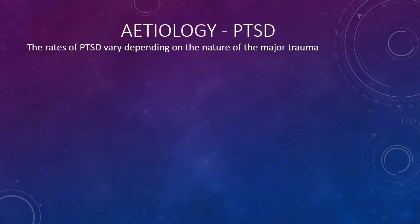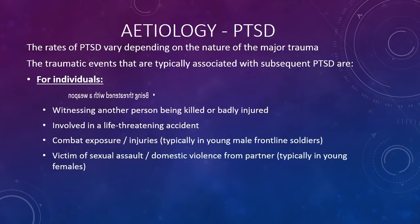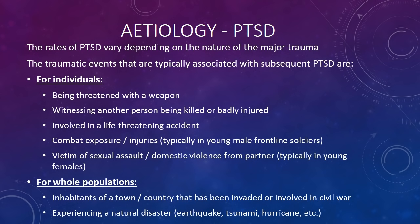The rates of PTSD vary depending on the nature of the trauma. Events typically associated with subsequent PTSD include being threatened with a weapon, witnessing another person being killed or badly injured, being involved in a life-threatening accident, combat exposure or injuries (typically in young male frontline soldiers), being a victim of sexual assault or domestic violence (typically in young females), and for whole populations: living in a town or country that has been invaded or is involved in civil war, or experiencing a natural disaster such as an earthquake, tsunami, or hurricane.